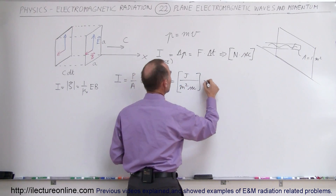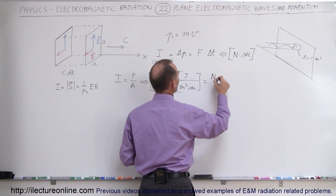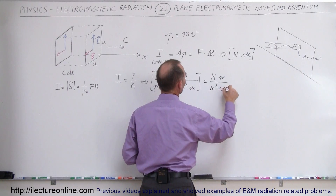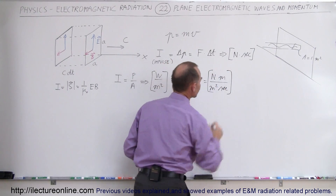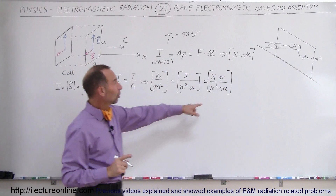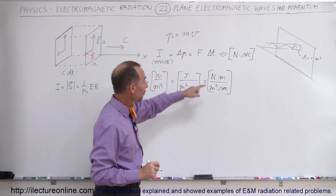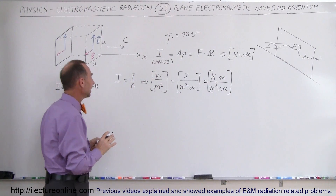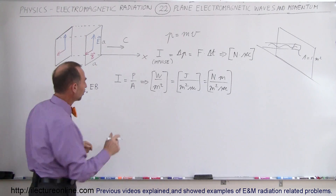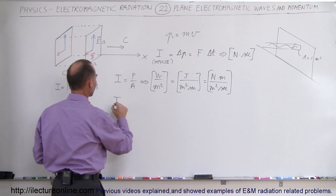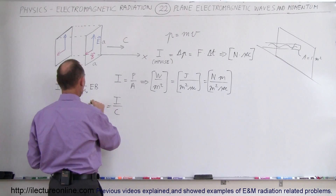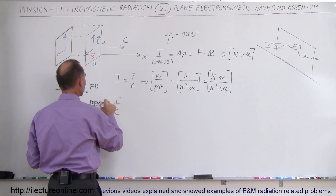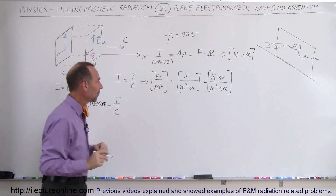A joule is a newton meter, so we have newton times meter divided by meter squared times seconds. That's nowhere close to having newtons times seconds — we do have newtons, but seconds are in the wrong place. But then we realize that pressure is equal to I divided by C, so I divided by C equals pressure.